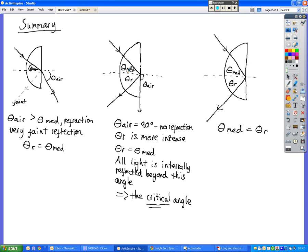This is the point at which all light is going to be internally reflected, and that is called the critical angle. Beyond that critical angle, we're going to have the same case again. Theta in the medium is equal to the angle of reflection. So all light is going to be reflected backwards at that point.